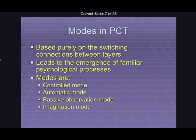The concept that Bill Powers brings in to explain these processes is what are called modes. This doesn't involve adding extra boxes or suggesting new components. It's merely about directing the way that information is transmitted between the levels of a hierarchy. What Bill Powers invokes is some switches essentially and some very minimal local storage which he calls memory. From that you get the emergence of four different modes which Powers calls controlled, automatic, passive observation, and imagination.